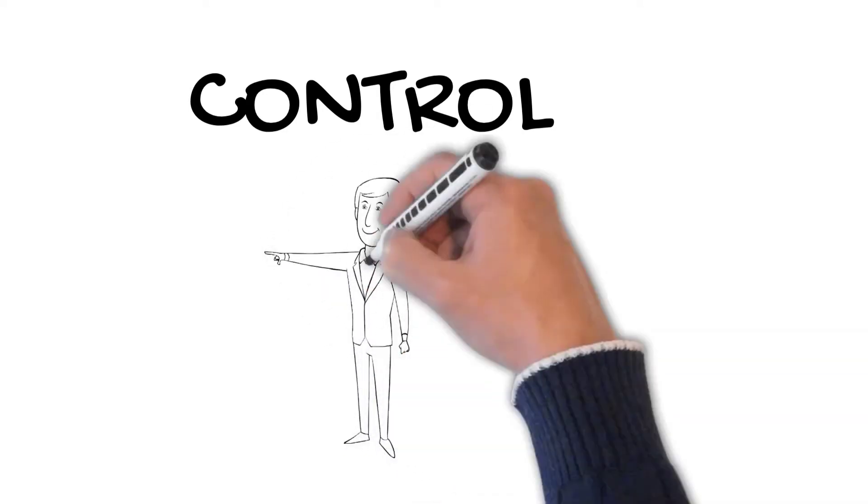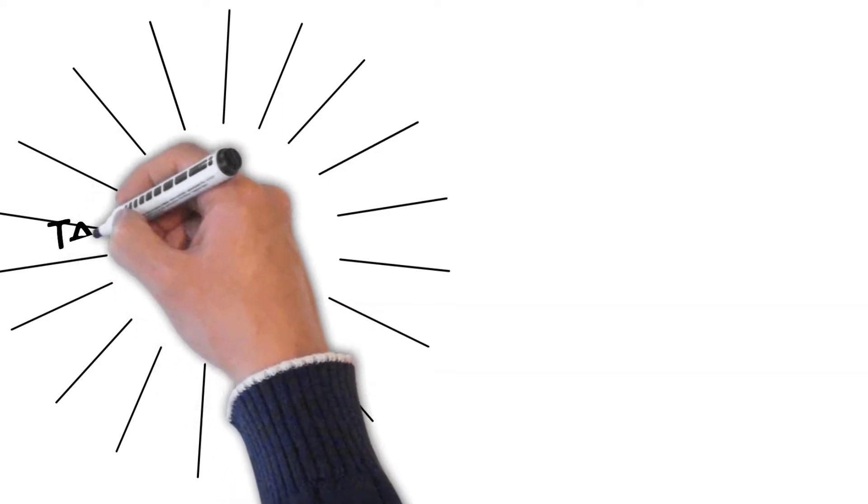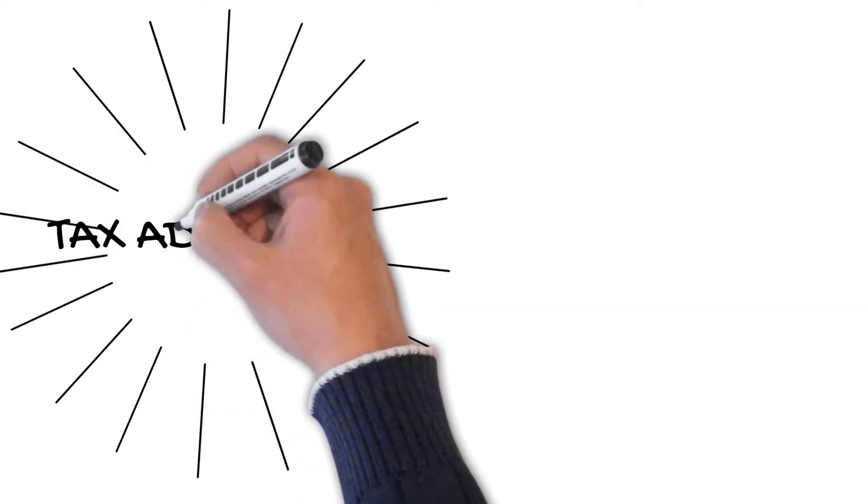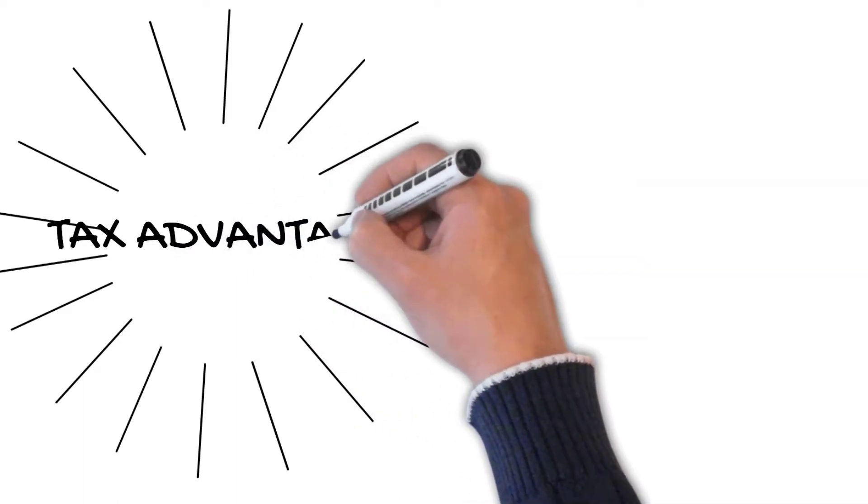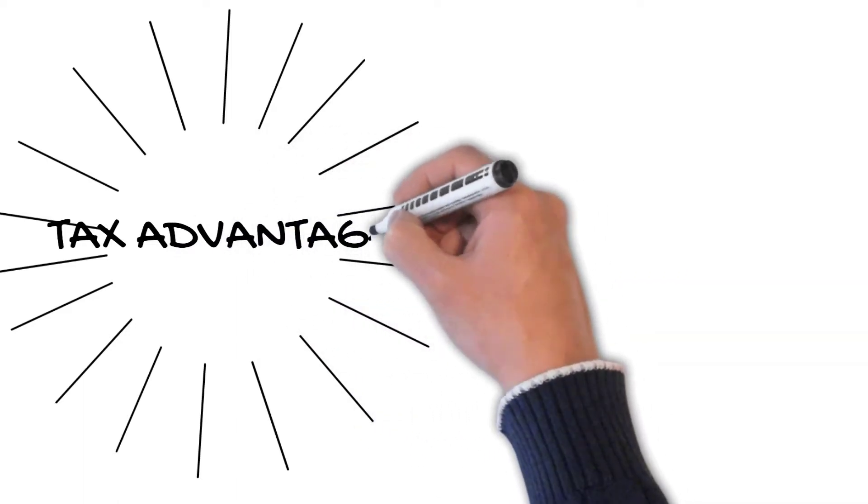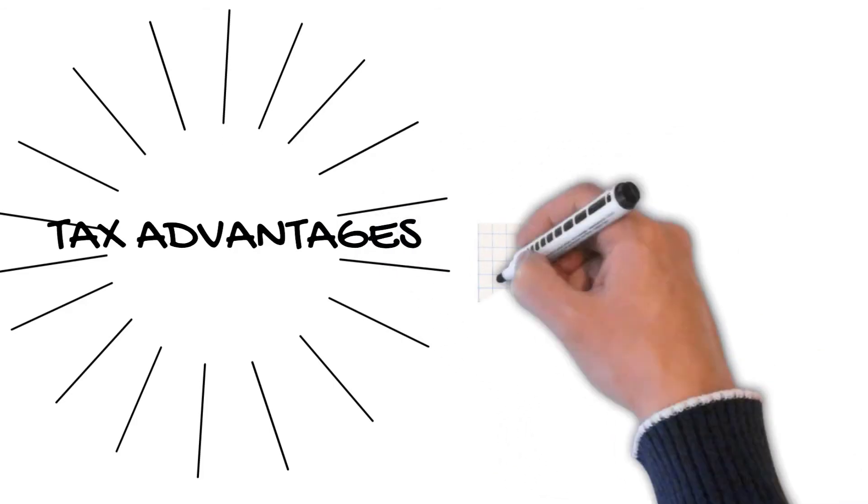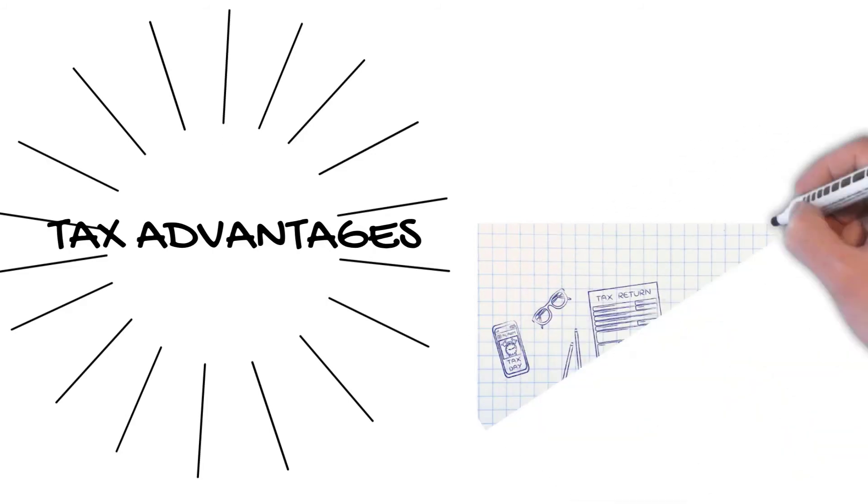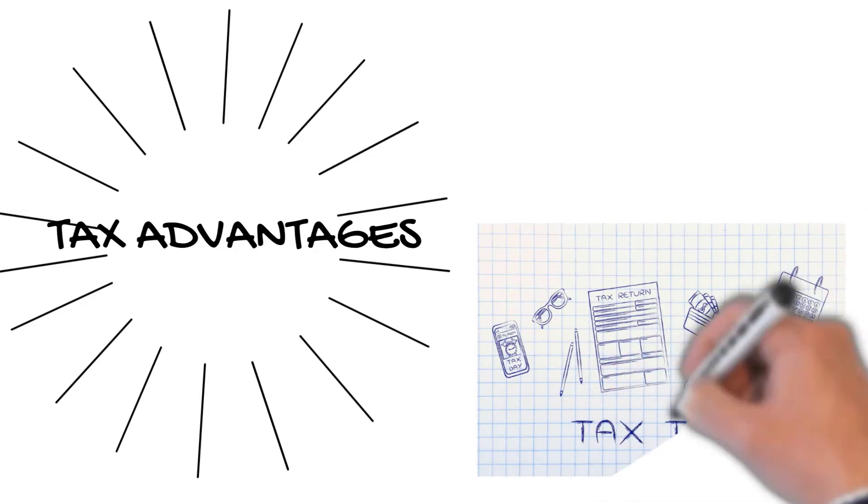Third, tax advantages. It is not what you make but what you keep, and this is important. Real estate offers tremendous tax benefits. Why would the government create advantages for this tax class? That's a good question. Well, the government realizes that it does not have the ability to deliver affordable housing, and by offering these benefits it is trying to stimulate the private sector to step in and fill the void.